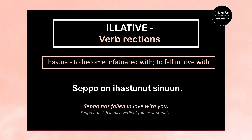Next: Seppo on ihastunut sinuun — Seppo has fallen in love with you. On ihastunut is the third person perfect tense of ihastua, meaning to fall in love with. Sinuun is the illative case of sinä. When using the verb ihastua, we use the illative case.